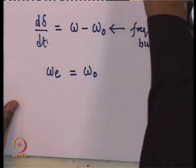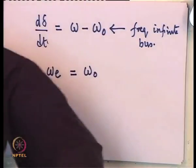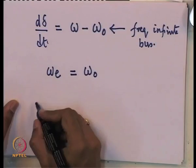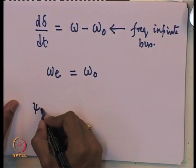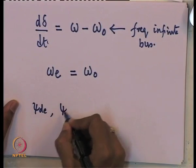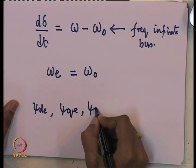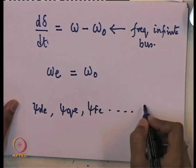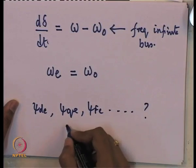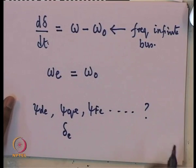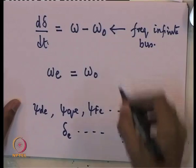Note that the steady-state torque expression is only valid during steady state — please do not use it for transient conditions. Under equilibrium conditions, setting d(delta)/dt = 0 gives omega_e = omega_naught, and setting d(omega)/dt = 0 gives T_m equal to the equilibrium torque value. This is basically what is involved in getting the equilibrium values first.